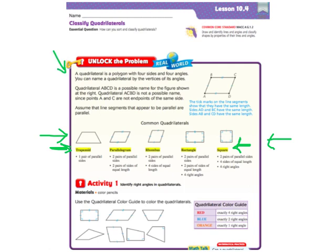Here's our definition. A quadrilateral is a polygon with four sides and four angles. You can name a quadrilateral by the vertices of its angles.